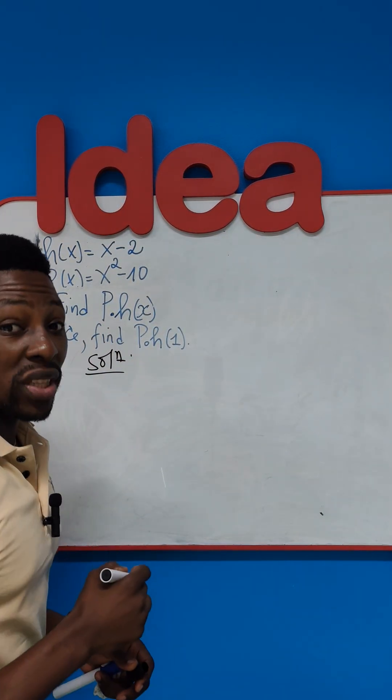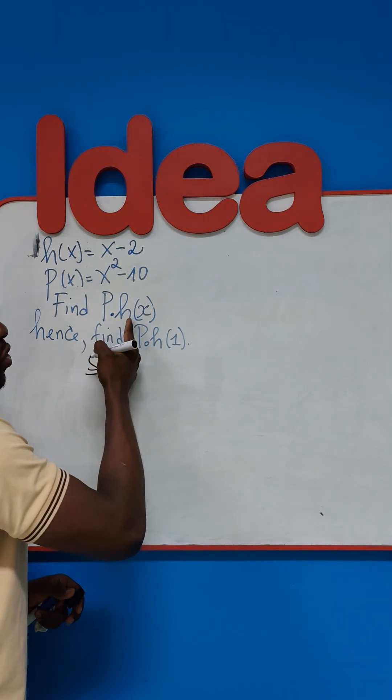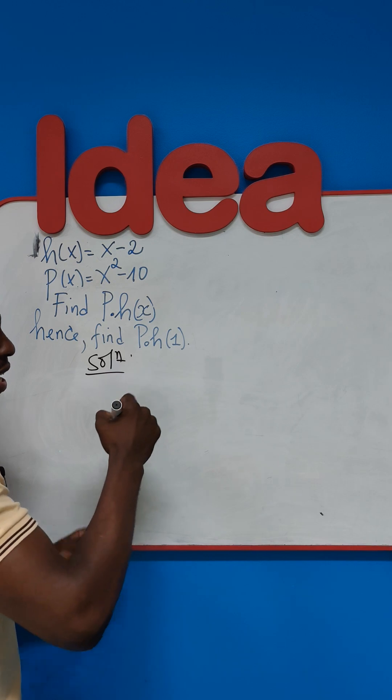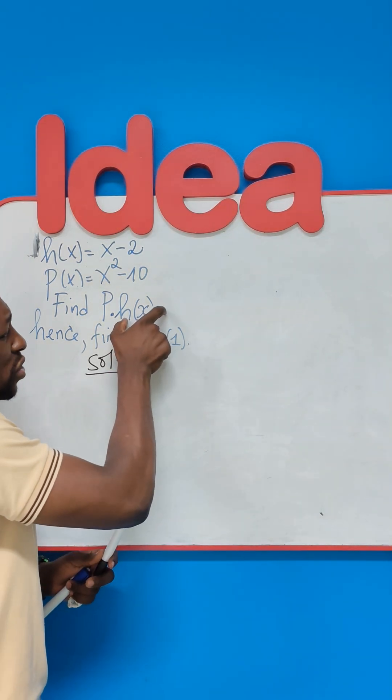Again, we are still talking about composite functions, wherein we are substituting a certain function in another function. And like I always say, the rule or the secret here is to start from the innermost function.